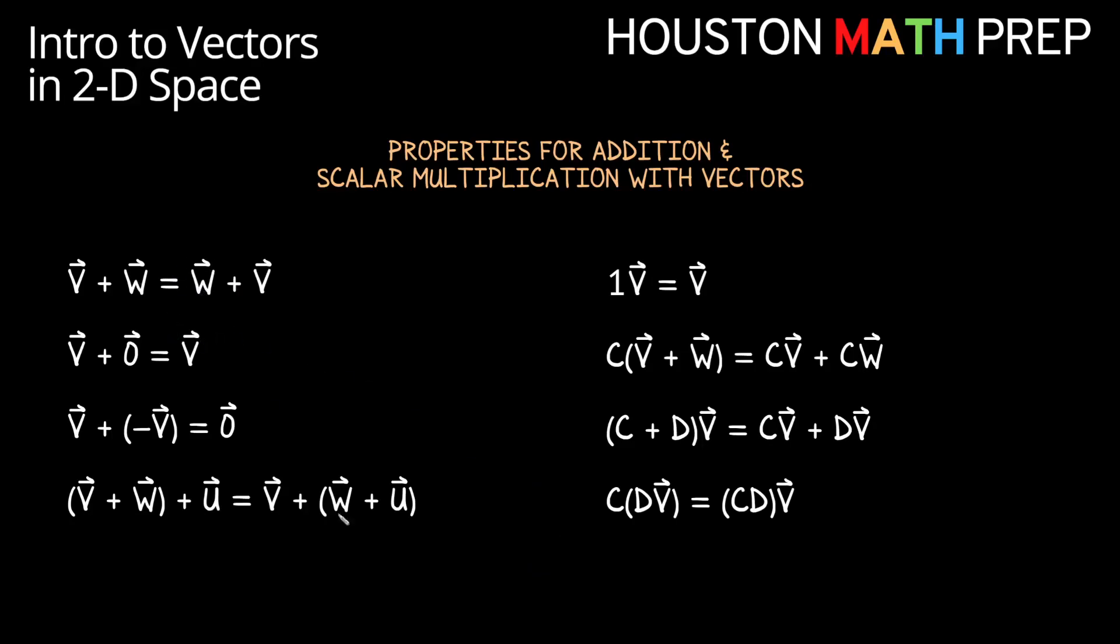This first one here we already mentioned earlier. This one just says that we can add vectors in any order we like and get the same answer. So adding V plus W gives us the same thing as adding W plus V. Remember a word in math for being able to swap things on either side of the operation is called commutativity. So this says that vector addition is commutative.